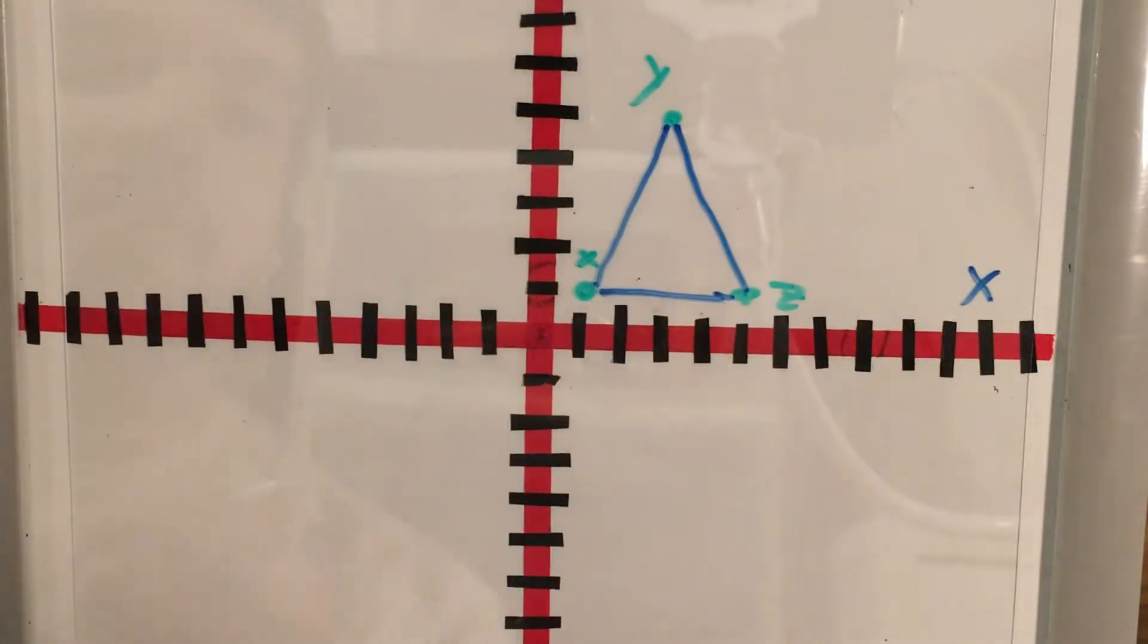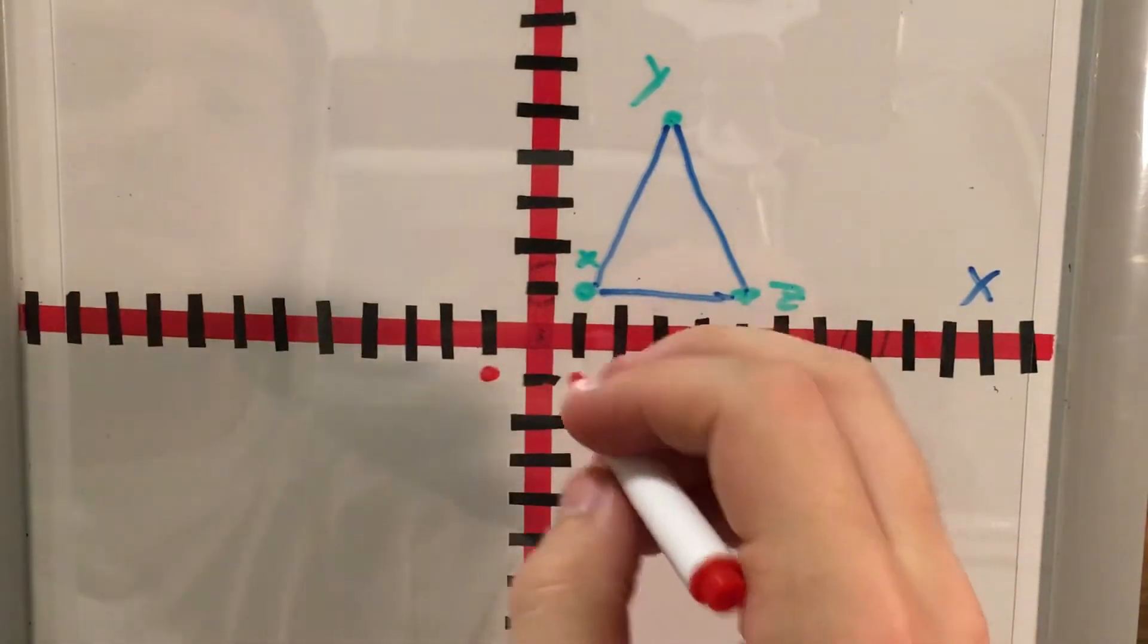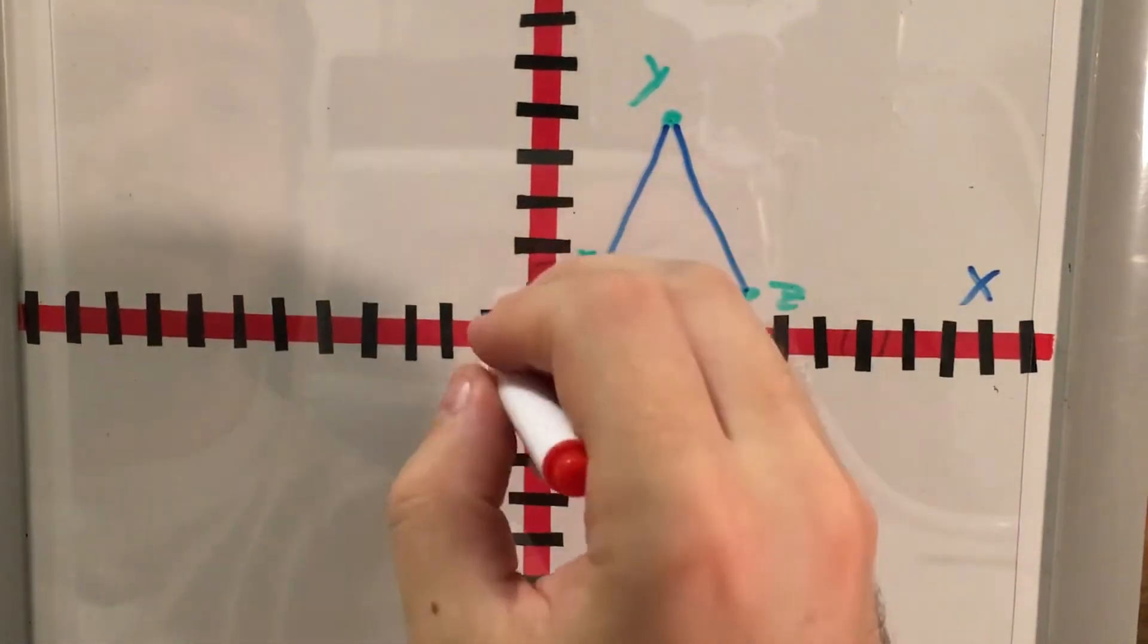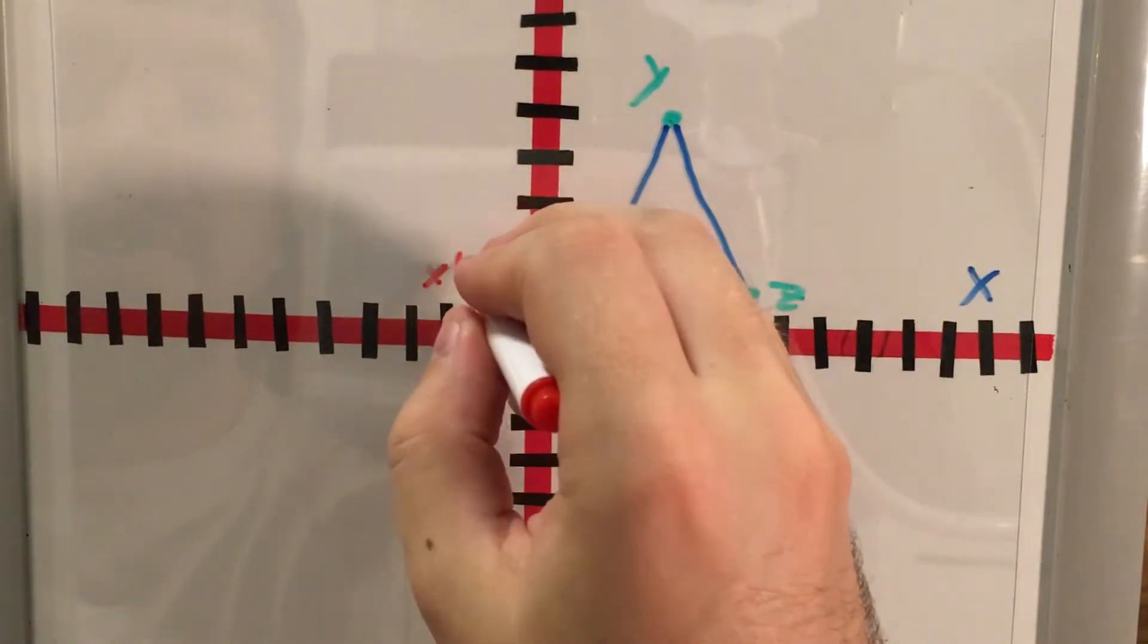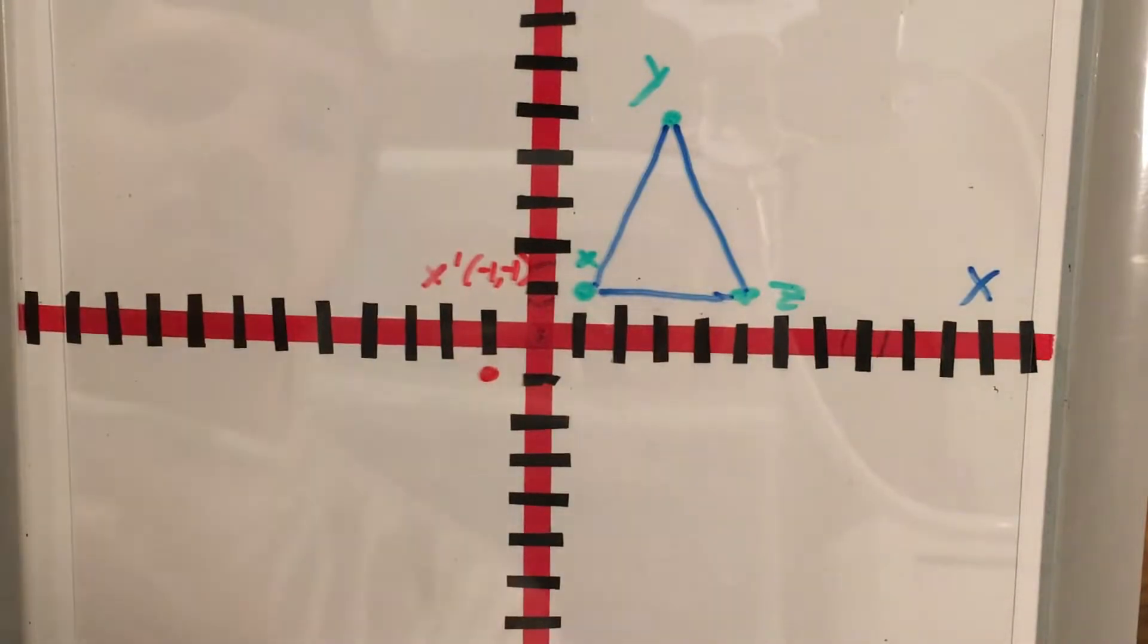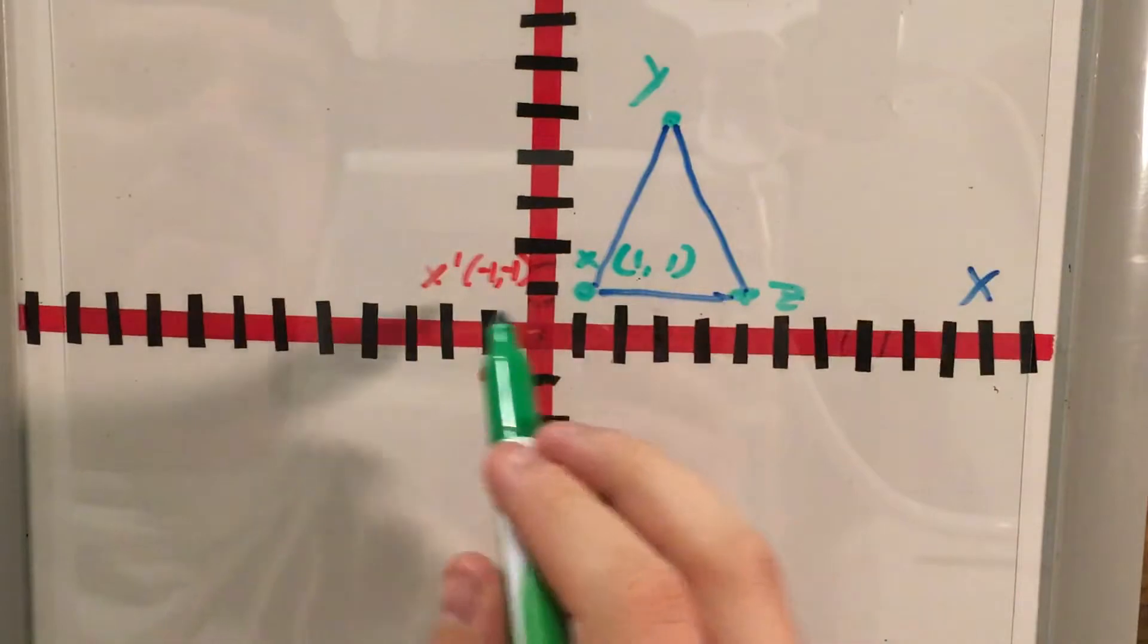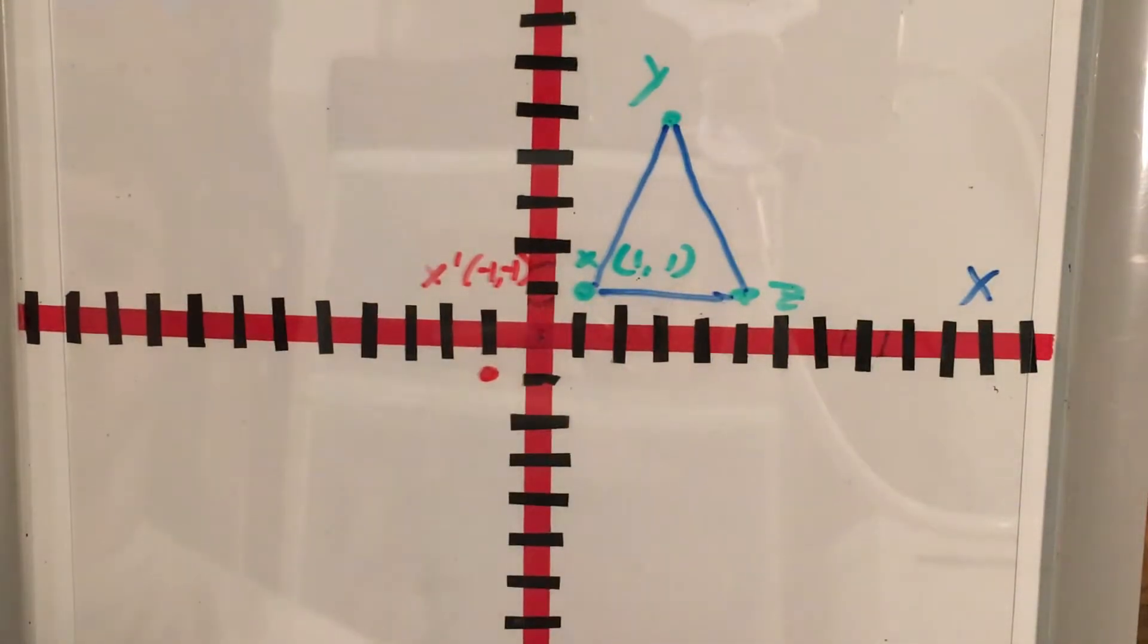So I'll use red for the new triangle's points. That actually puts me right here. Now if you're already trying to figure out the coordinates of this, I'll tell you right now, X prime, the new X, is at (-1,-1), whereas original X was just at (1,1). So we've taken both these numbers and made them negative. That seems a little weird. Let's go ahead and try the same thing with point Z and point Y.